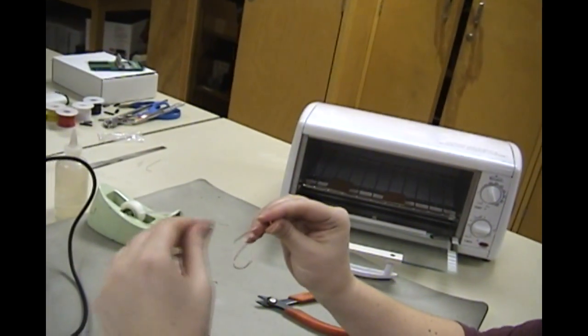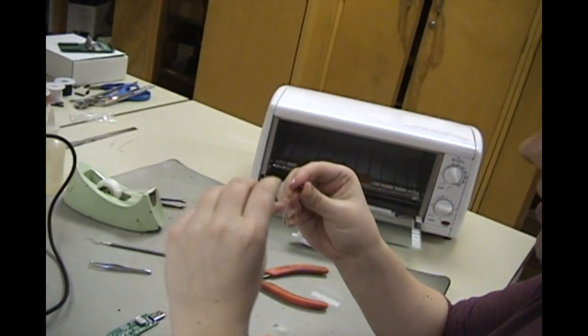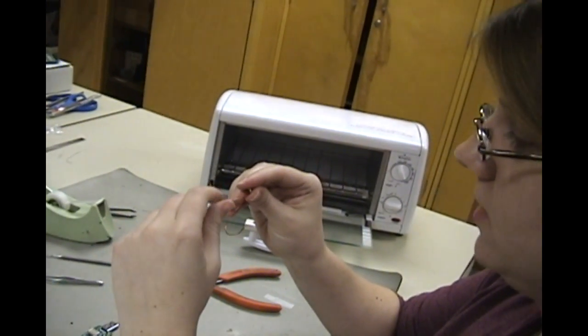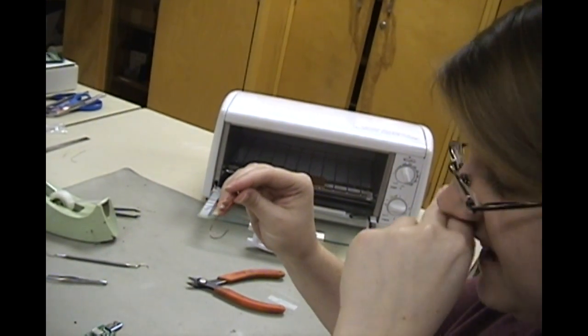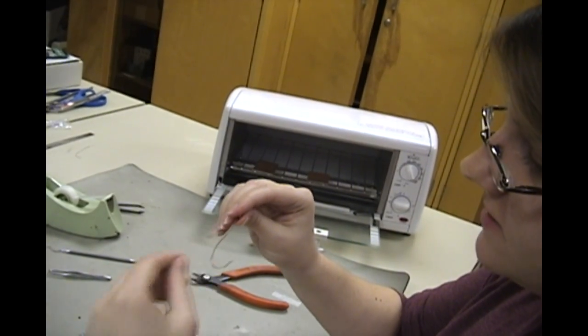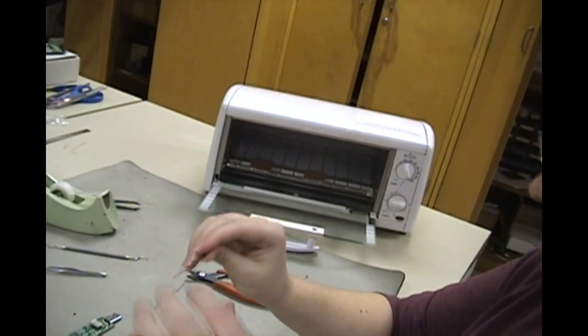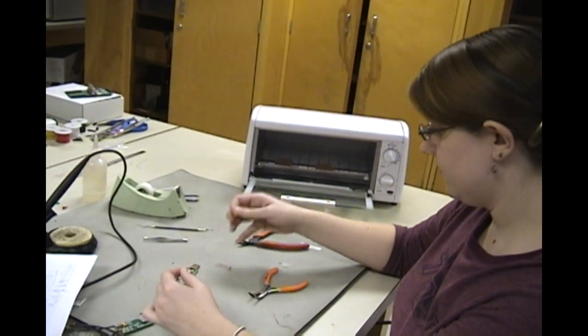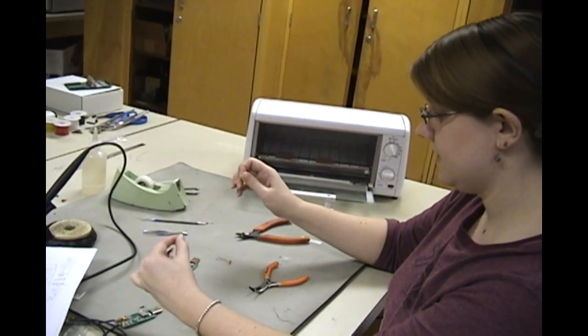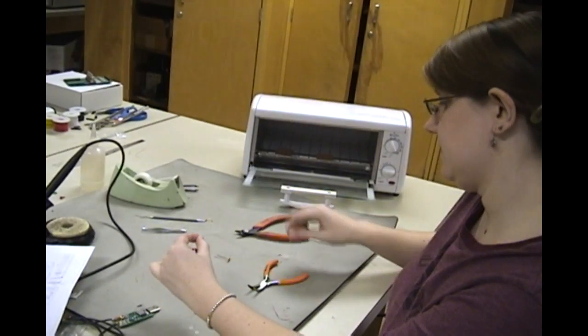So now you have two fairly long leads, and these are insulated, so before we solder them into the board, we're going to need to go and sand them down a little bit, so the inside is actually exposed. Alright, and now for the second part, we're going to take about six inches and do eight turns.